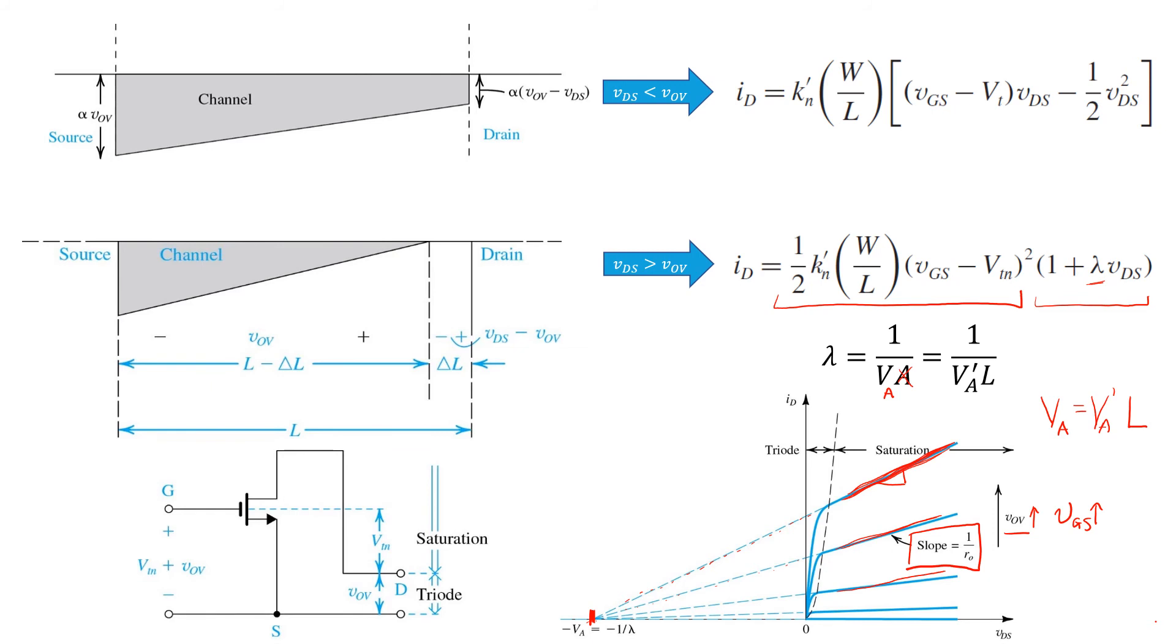We call that resistance RO, the output resistance of the MOSFET in saturation. Or some people refer to it as RDS in saturation, although that can get confusing, because we've also used RDS to represent the resistance of the channel region in triode, which we see is much lower, because clearly in this part of the curve, the slope is much higher.